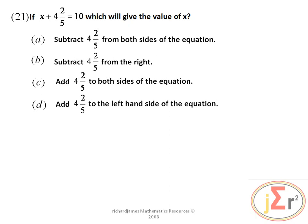Our first problem: if x plus 4 and 2 fifths is equal to 10, which will give the value of x? We have the options right there but we will not bother to go through them. We are going to solve the problem on our own and then see how our solution matches with any of the options that we have there.